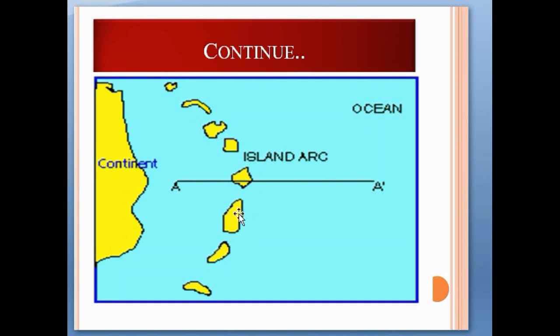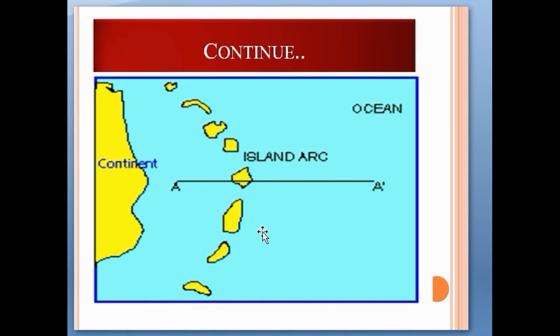This is a diagram of island arcs. As you can see, these are the dotted island arcs. The island arc is convex towards the ocean and concave towards the continent, and towards the ocean there are deep trenches.